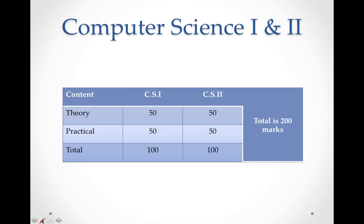Computer Science is a combination of two subjects: CS1 and CS2. The theory paper for each is 50 marks, and practical is also 50 marks each, giving you a total of 100 marks for CS1 and 100 marks for CS2. CS is a very scoring subject, especially in practical, where it is easy to score and will automatically increase your percentage. CS will completely give you 200 marks.